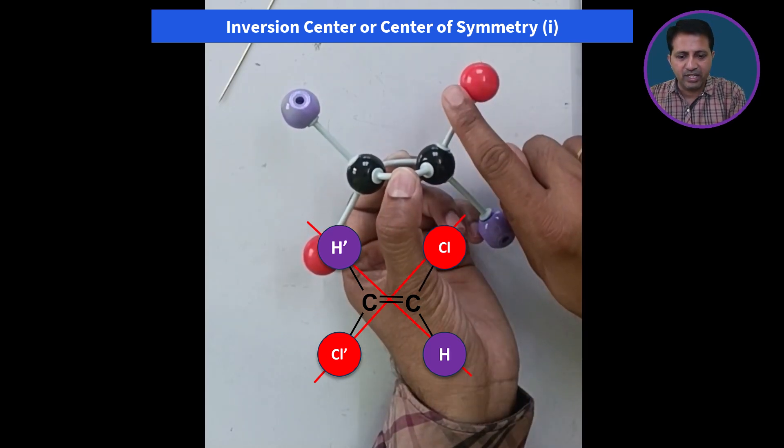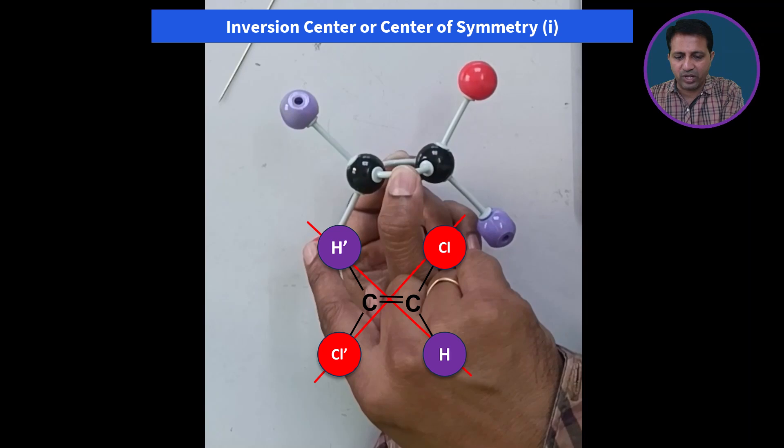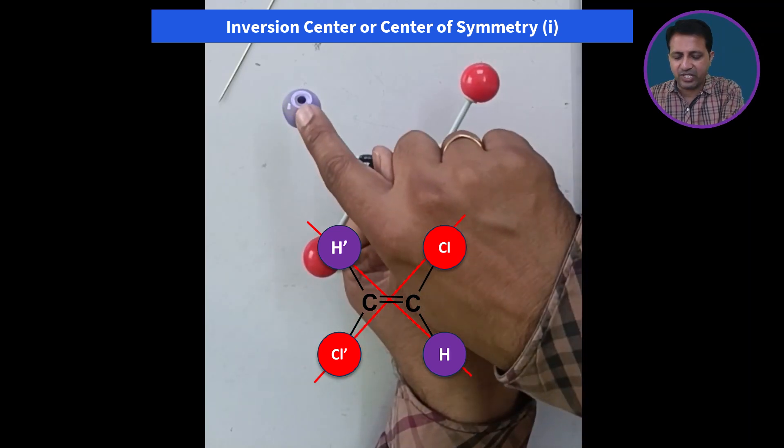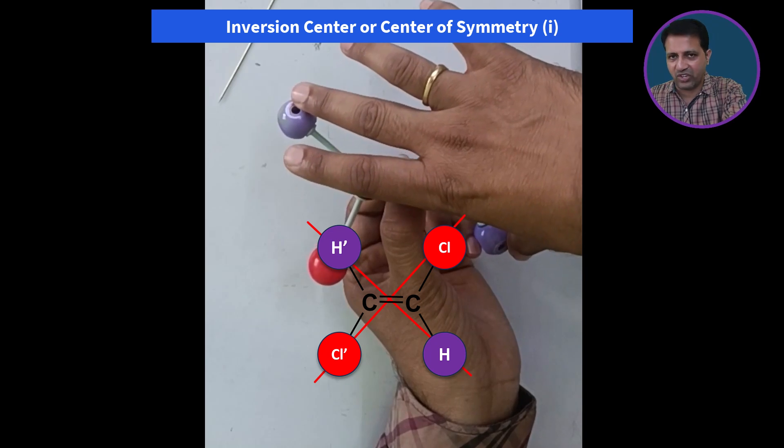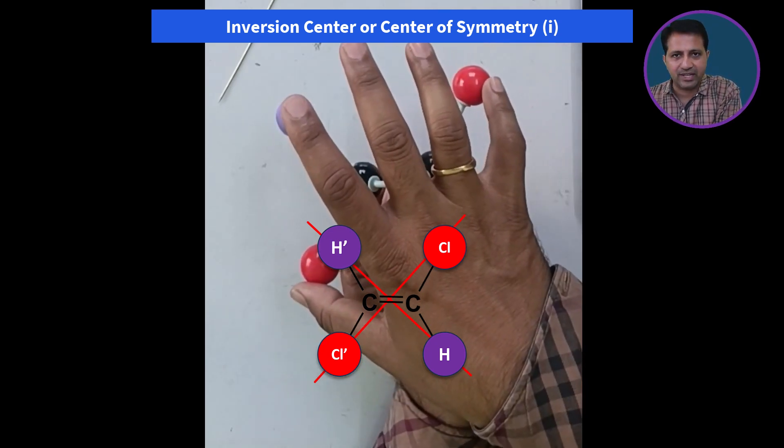In this case, chlorine is exchanged with chlorine prime, while hydrogen prime is exchanged with hydrogen atom. It means these two get exchanged and these two get exchanged.